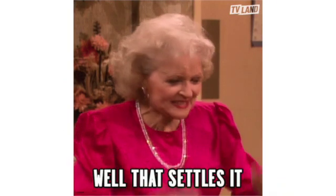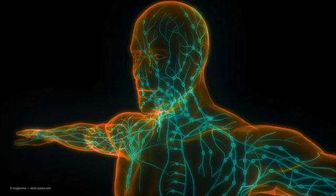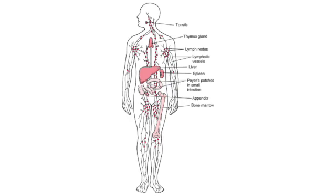Now that we have discussed what the lymphatic system is from a broad point of view, let's move on to the anatomy of the lymphatic system. Our lymphatic system contains lymph, lymph nodes, lymphatic vessels, collecting ducts, the thymus, bone marrow, spleen, appendix, tonsils and adenoids, and Peyer's patches.